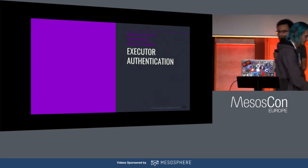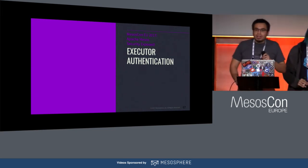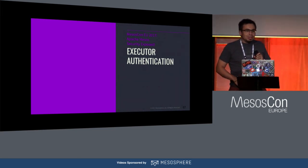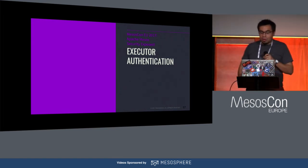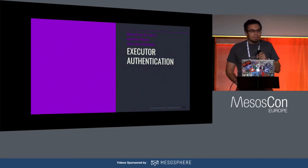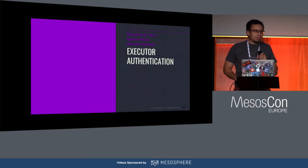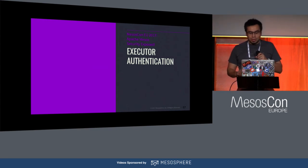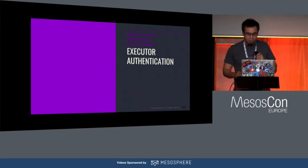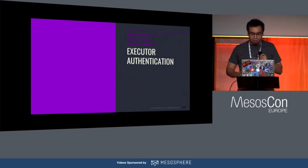Alexander: I'll be focusing on the most important things we've done over the last year. One of the most important is executor authentication. The issue we were tackling is a serious security problem that happens when an executor is launched inside Mesos. I'll explain how it used to work and then what we did to fix it.